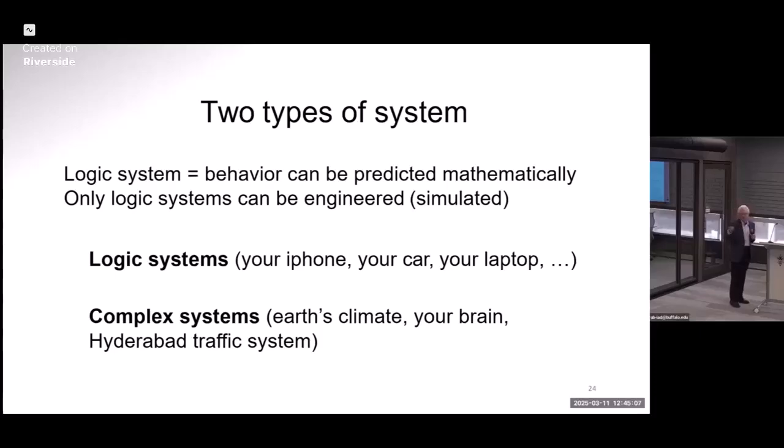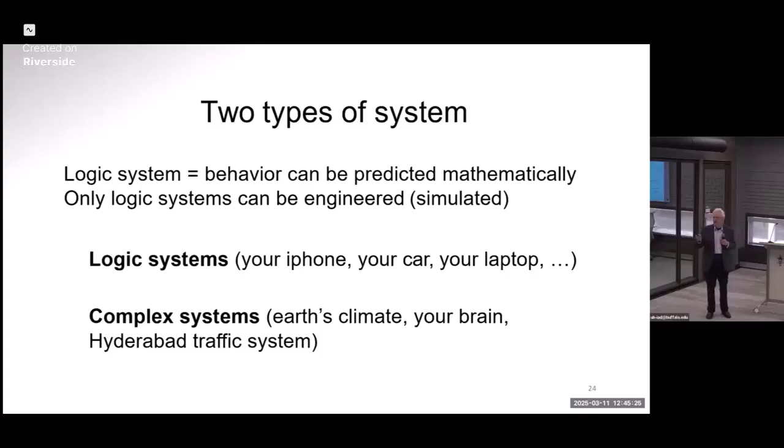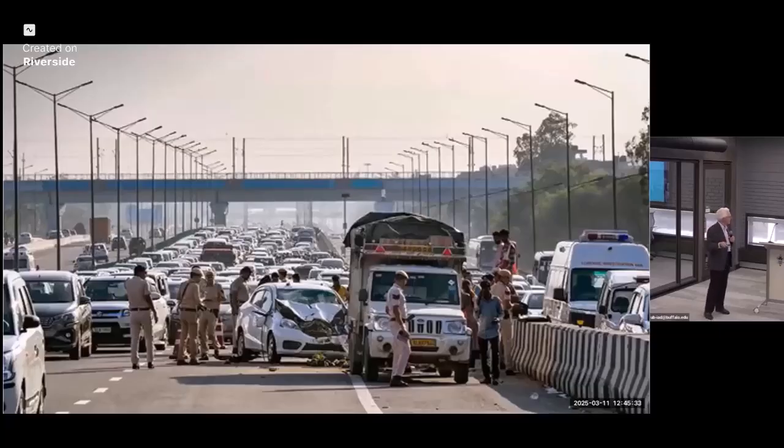There are two kinds of systems. The logic system, where we can predict mathematically what the system will do under given conditions, and that's how we build them. We design them using mathematics. And then there are complex systems where we can't make predictions. Or if we can, they'll be very approximate predictions. But we can't make the sorts of predictions which would be needed to build, to engineer an artifact which would have that system.